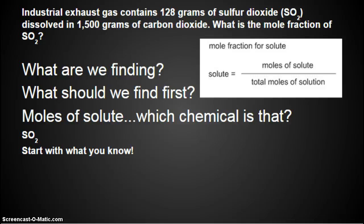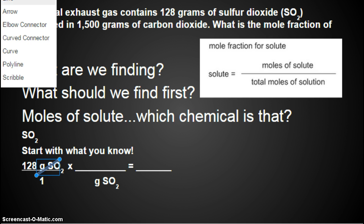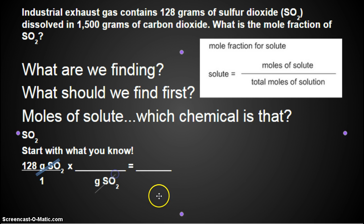So what do we know about SO2? How much do we have? 128 grams, put it over 1. What unit has to be on the bottom of our next fraction? Has to be grams SO2 so that this cancels out with that, right? It's all about the cancelling. And because we want to change from one unit into another, so we're going to end up canceling those units out.